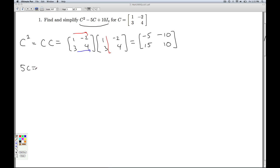5C. How do you take 5 times the matrix? Well, this is scalar multiplication. We multiply each of the entries by the scalar 5. So 5 times 1 is 5, 5 times negative 2, negative 10, 5 times 3, 15, 5 times 4, 20. So that's 5C.